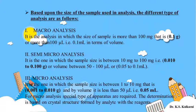For micro analysis, since very small amounts of sample are present, regular apparatus cannot be used to determine the required things. For micro analysis, you have to use a special type of apparatus, and the determination is based on the crystal structure formed by the analyte with the reagent. The further types of methods we will see in our next lecture.